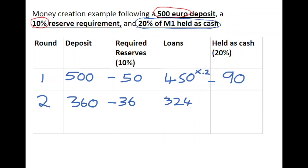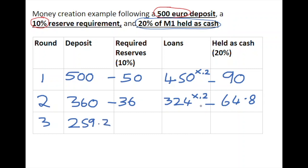Now we have two separate loans: the €450 and the €324 created. We know that people will hold about 20% of this out in the economy as cash, so we multiply by 0.2 and get €64.80 held outside the system. Only the difference between the loan and that amount held as cash gets recycled back in, which is €259.20.